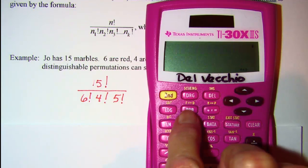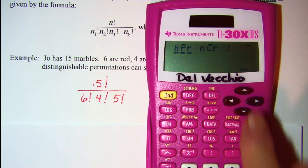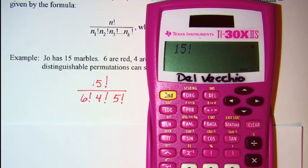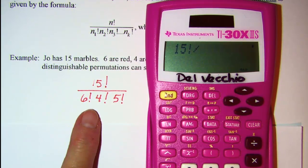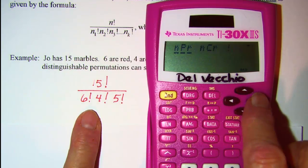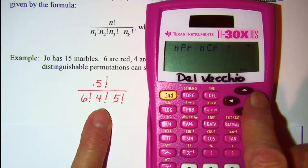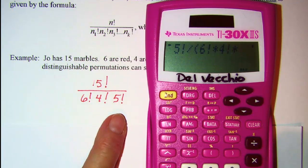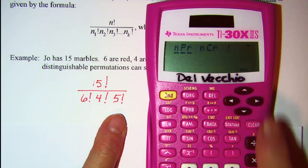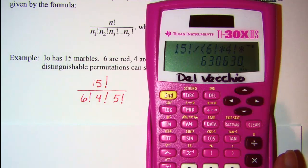Now on this calculator, my factorial is found in the probability menu, so I need to first hit 15, and then hit the probability button, and go to the factorial notation, and press enter. Now I have 15 factorial divided by, and since I have more than one thing multiplied in the denominator, I want to open my parenthesis, and then 6 factorial times 4 factorial times 5 factorial. Close my denominator and press enter. So I have 630,630.